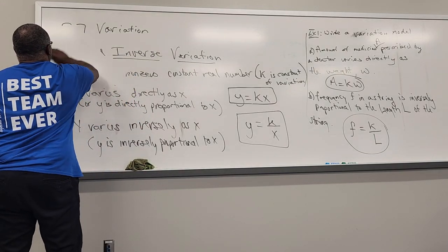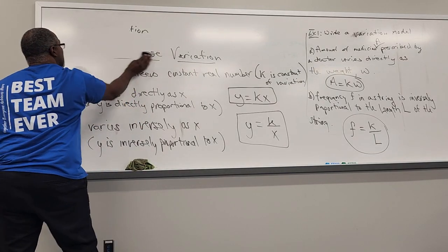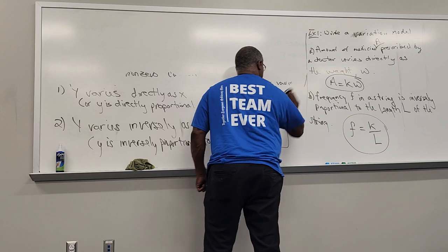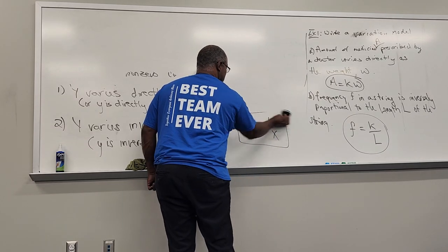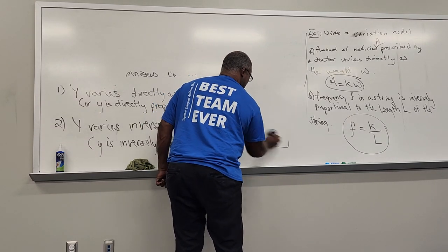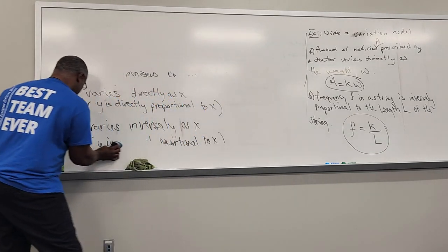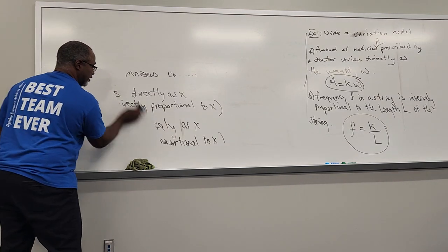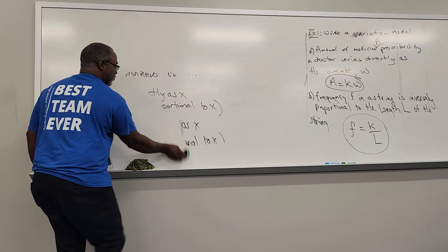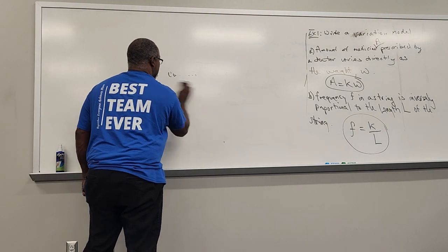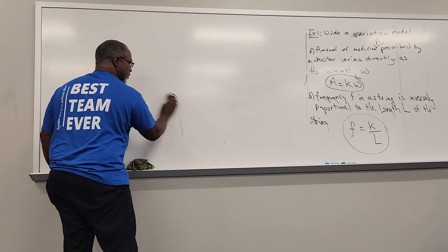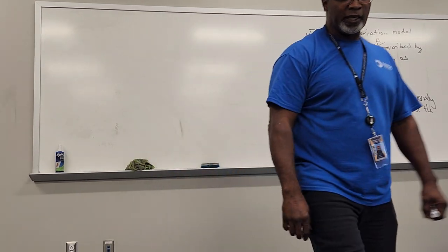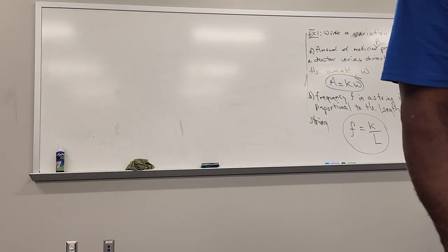So we read the problem and translate it into a math statement. If it's direct variation, the relationship is y equals kx. If it's inverse variation, the relationship is y equals k over x.